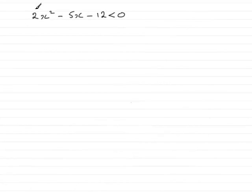Now in this part then, we've got to solve the quadratic inequality 2x squared minus 5x minus 12 is less than 0.